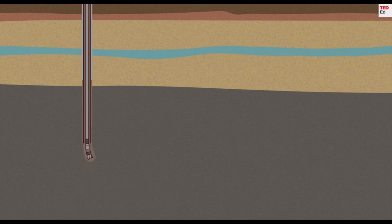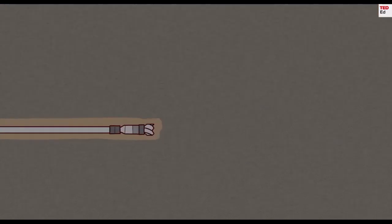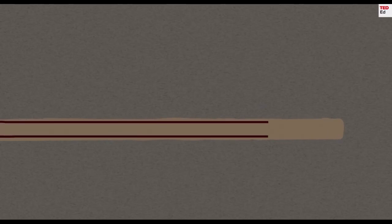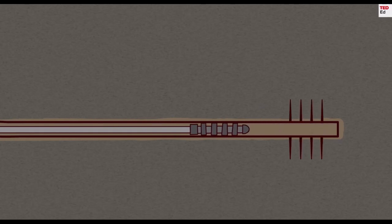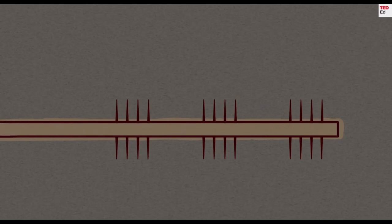It turns 90 degrees and extends horizontally for about 1.5 kilometers through a compressed black layer called the shale rock formation. A specialized perforating gun is then lowered and fired, creating a series of small, inch-long holes that burst through the well's casing into the rock layer.